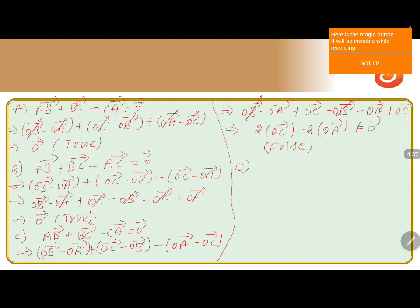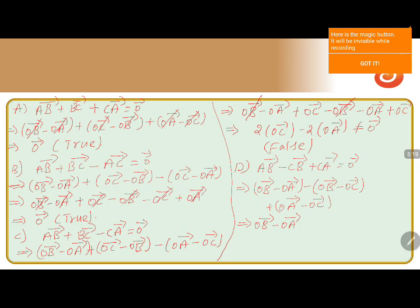Now for the fourth option: AB vector minus CB vector plus CA vector equals 0. AB vector is OB minus OA, CB vector is OB minus OC, and CA vector is OA minus OC. Expanding: OB minus OA, then minus gives minus OB plus OC, plus OA minus OC. OB, OA, and OC all cancel, giving 0 vector. So this option is true.